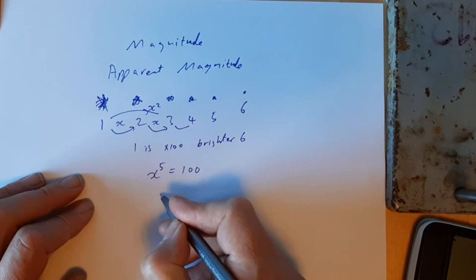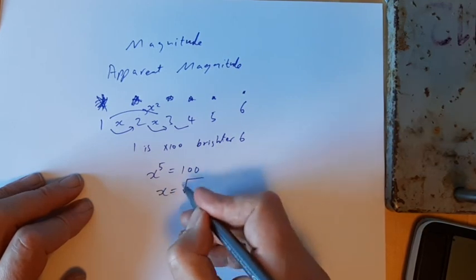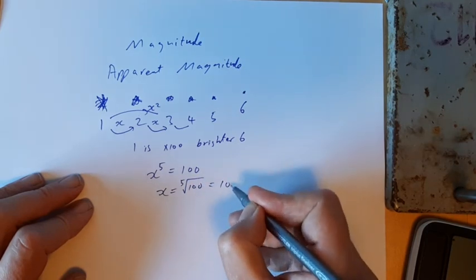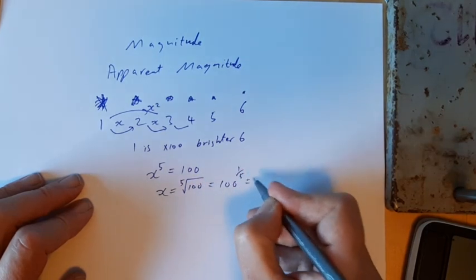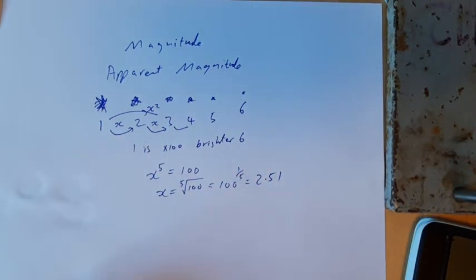So x is the fifth root of 100, which is 100 to the one-fifth, and that's 2.51. And you're expected to know that each step on the apparent magnitude scale is a step of 2.51.